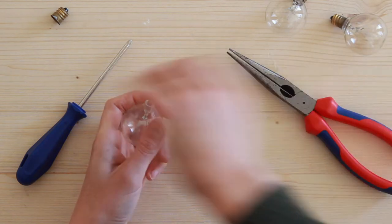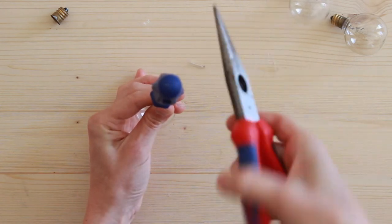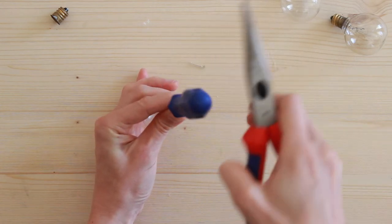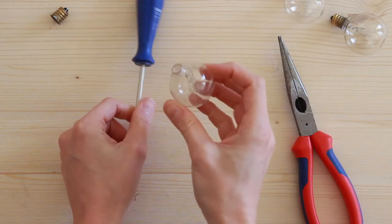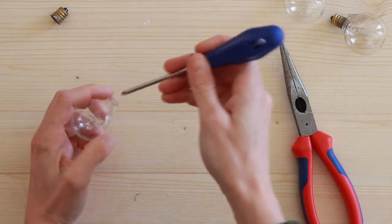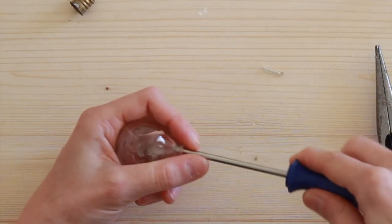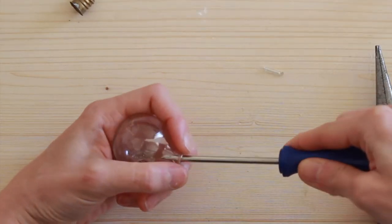Then place your screwdriver inside, take your pliers and tap it a little and then the inside should shatter. Once it's shattered, we need to break off a little of that bottleneck of the light bulb to get all the pieces out.